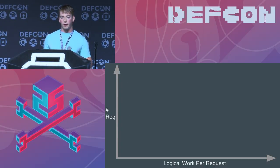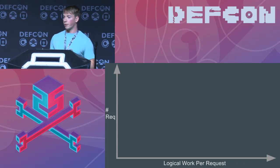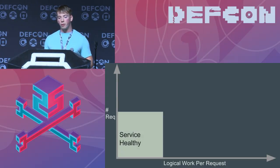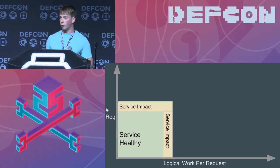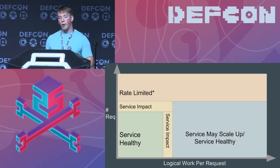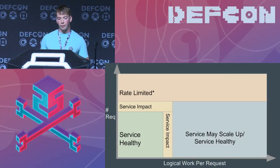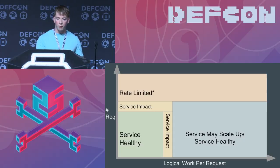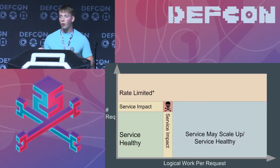Once we've built out that latent request, we need to find the sweet spot — the right balance of number of requests and logical work per request. There's a spot where the service is healthy, and a spot where there's service impact when there's enough requests and enough logical work per request. If we send too many requests too fast or too much work per request too fast, we're going to get rate limited — the firewall might kick in. If we don't send a lot of requests but the logical work per request is high, the service might scale up and stay healthy. Our job is to be just under where we'll get blocked by the firewall but cause enough disruption.